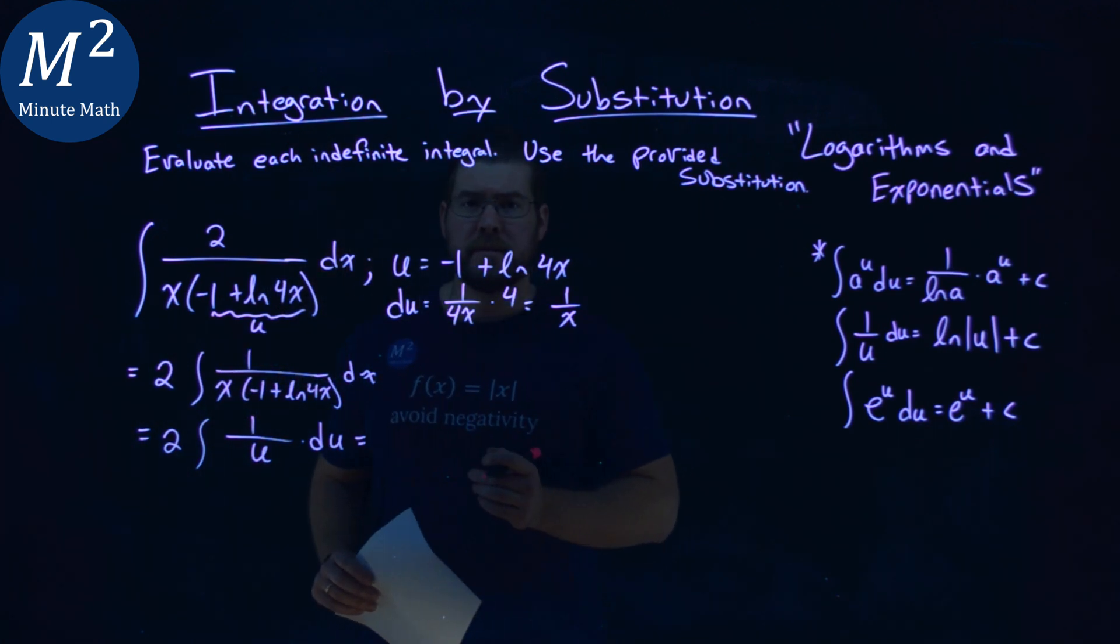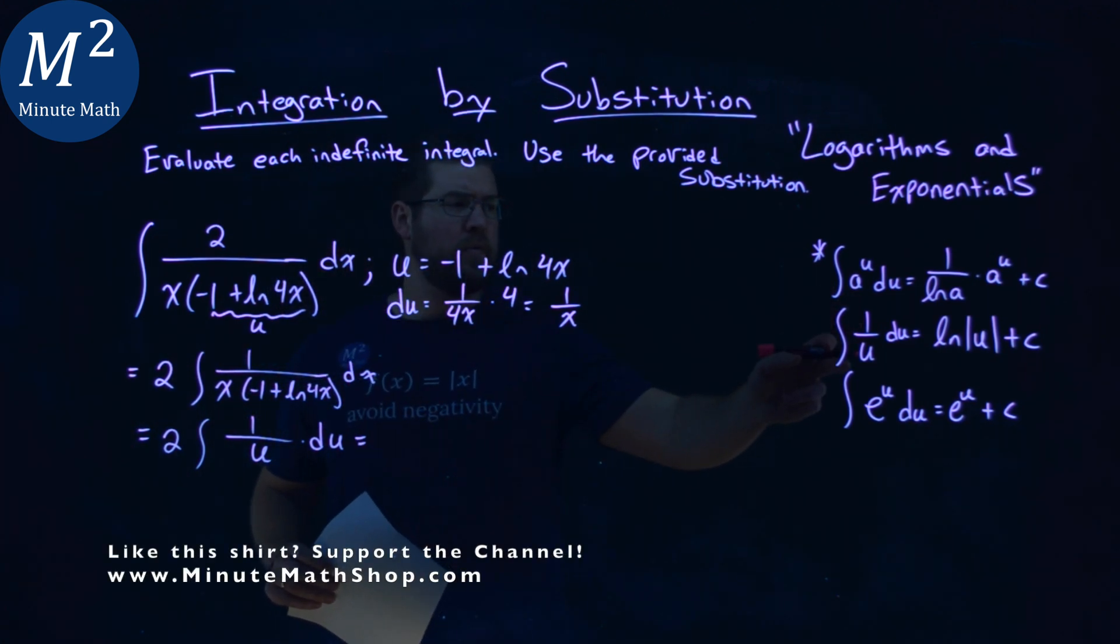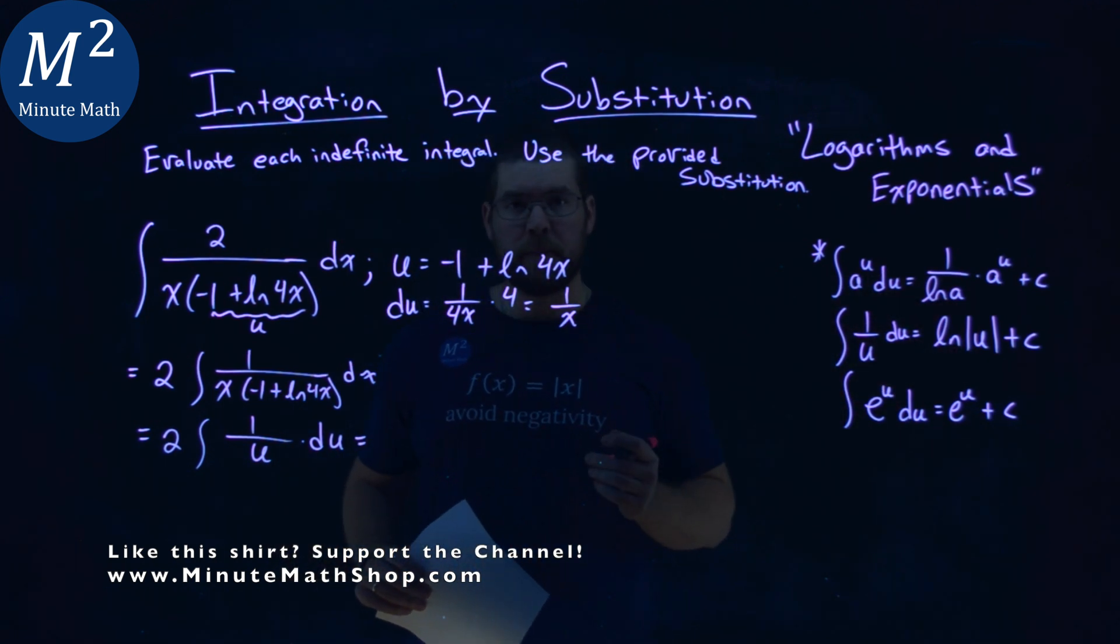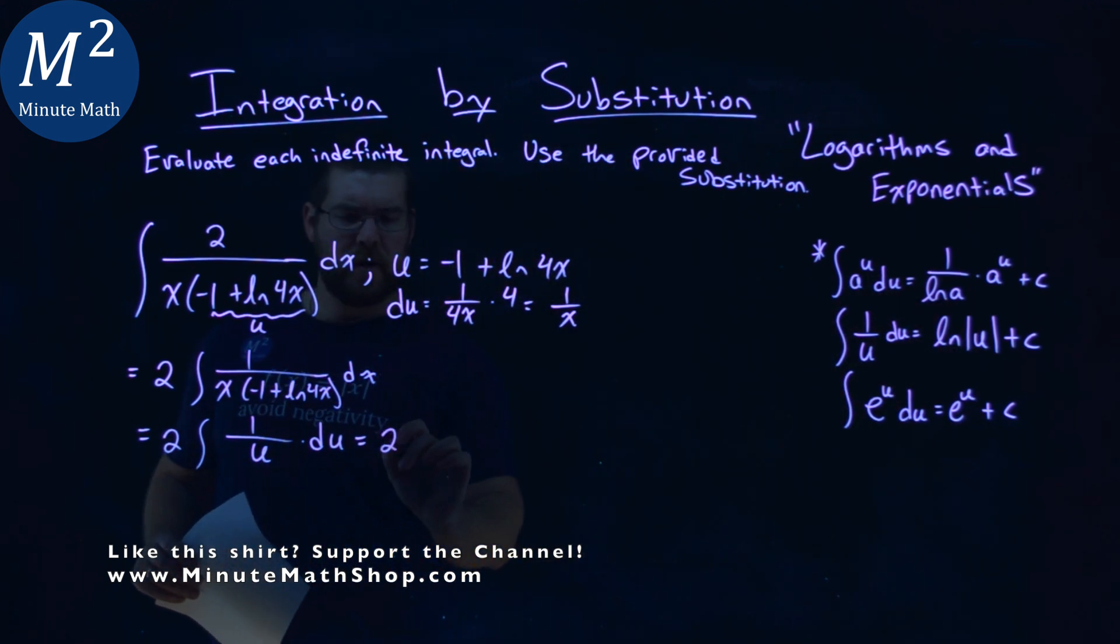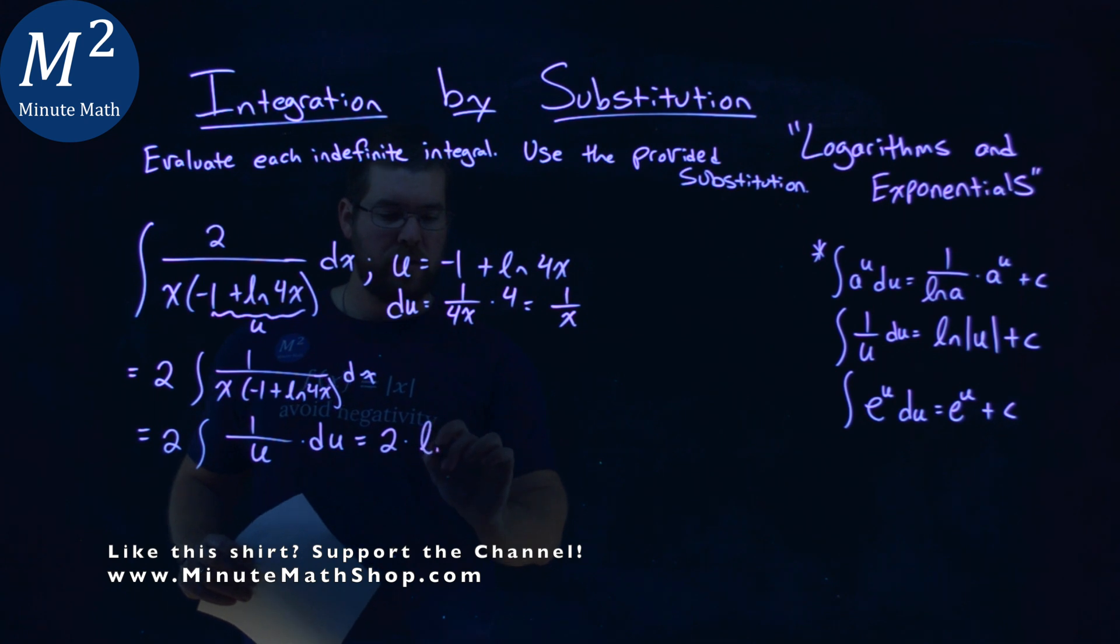Now we can use one of our definitions. The integral of 1 over u du is the natural log of the absolute value of u plus c. So we do that. We have the 2 out here times the natural log of the absolute value of u plus c.